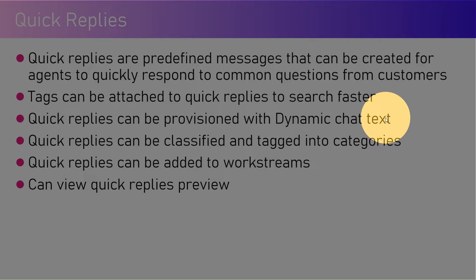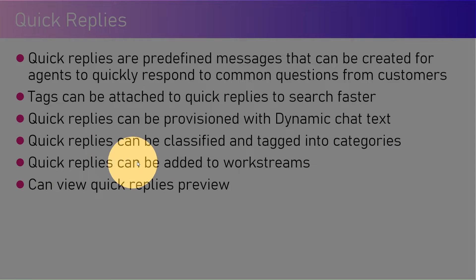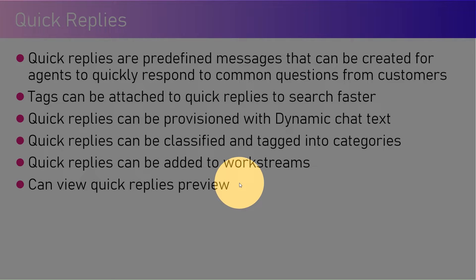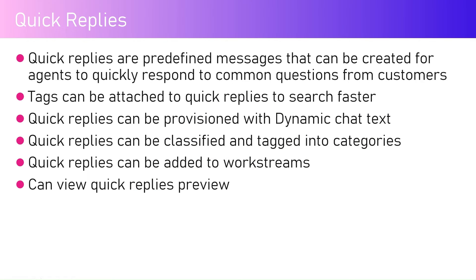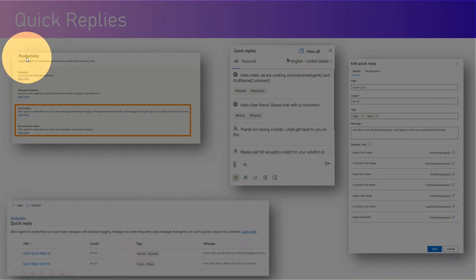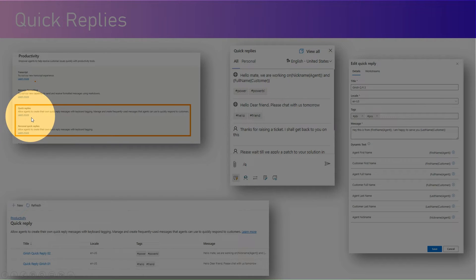Quick replies can be classified and tagged into categories. They can also be added to workstreams, and you can view a quick replies preview. Now let me show you this in action. First, I'll show you some of the available settings. In the screen, quick replies are available under Productivity — you can see quick replies listed there.